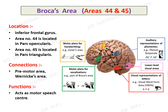Broca's area functions as the motor speech center, which means it regulates the coordinated movements of the lips, tongue, palate, pharynx, and larynx in response to words written, words heard, and words seen.